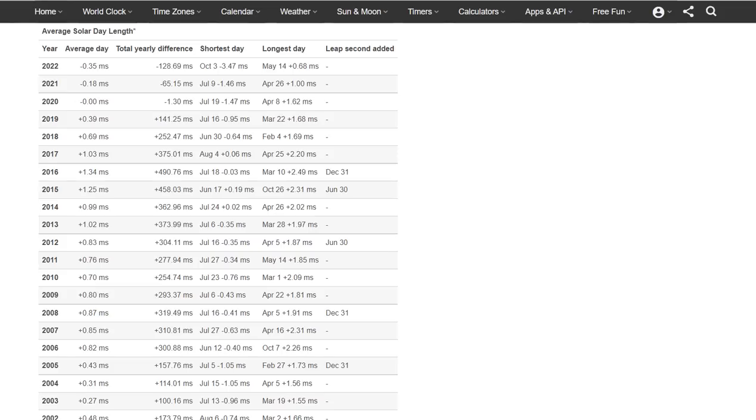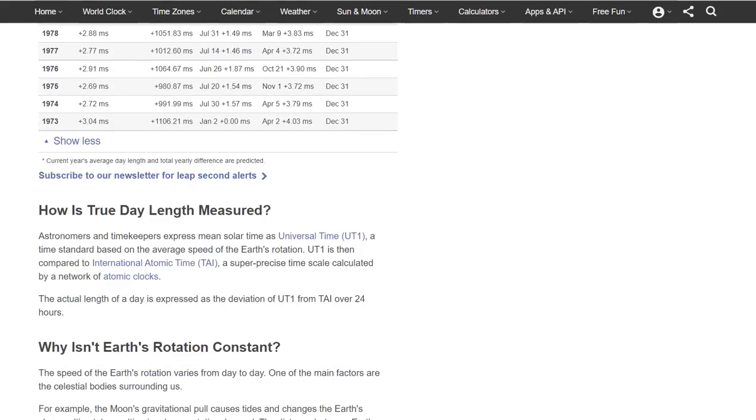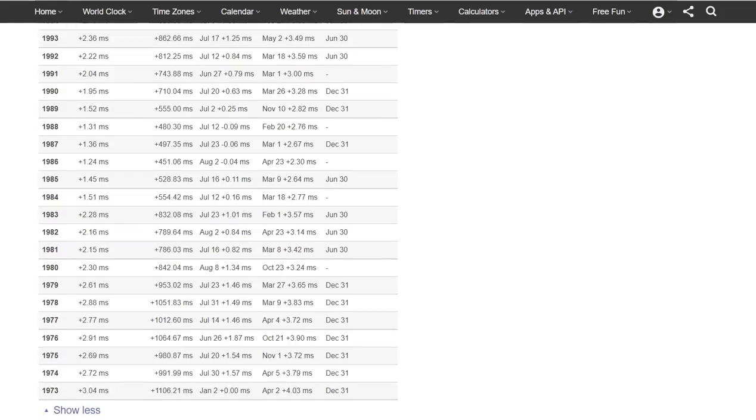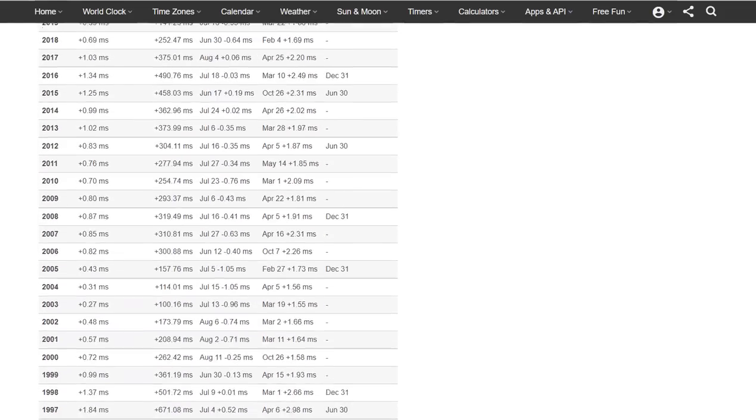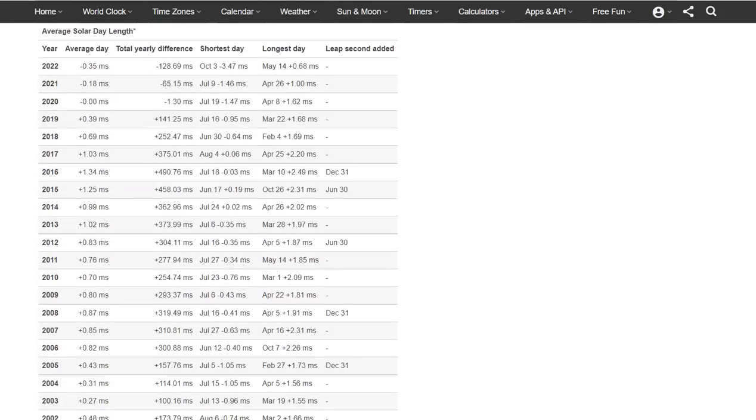The average solar day length has been shrinking. In fact, this year is lining up to be one of the fastest years on record, and on record means since 1973. Since that time, the Earth has lost about three milliseconds, so the rotation is speeding up.